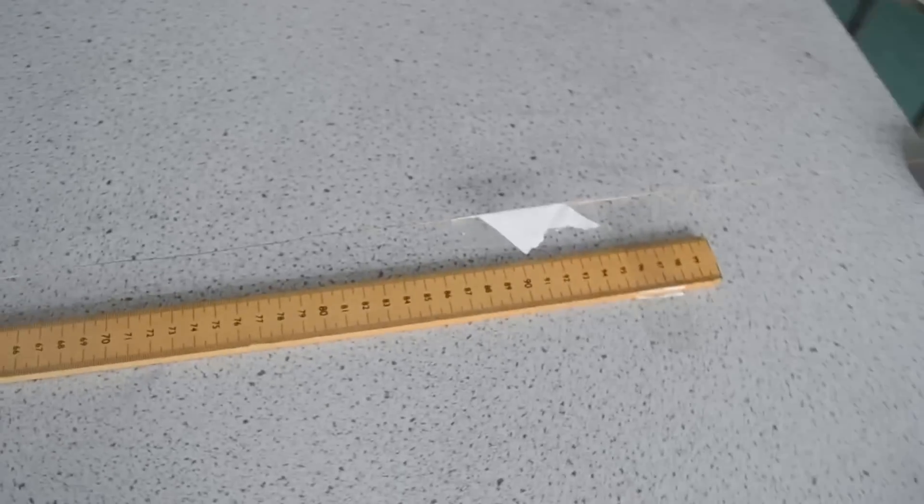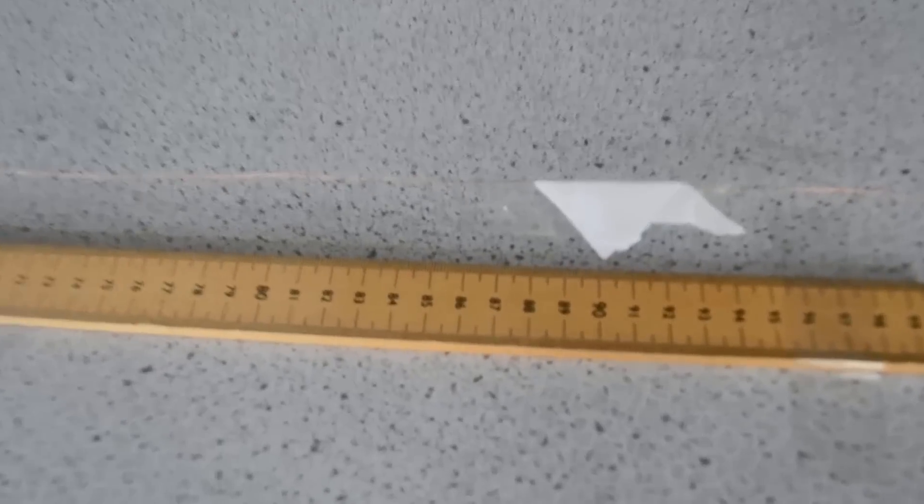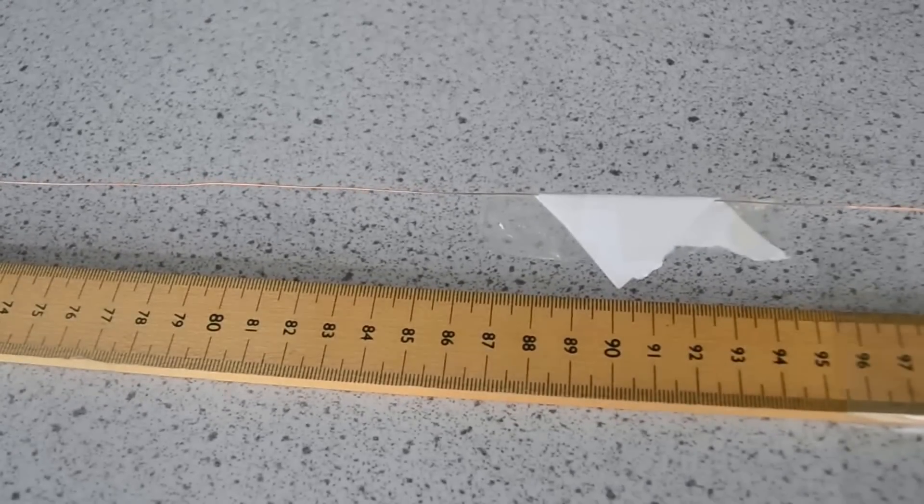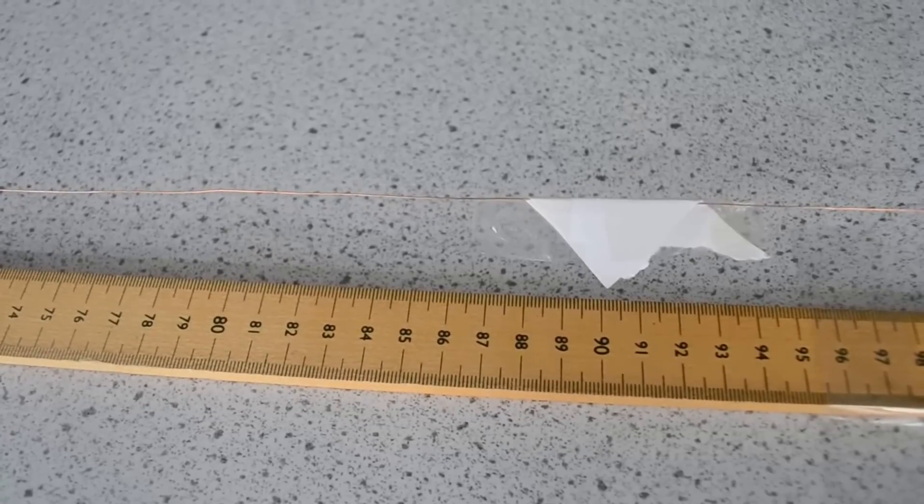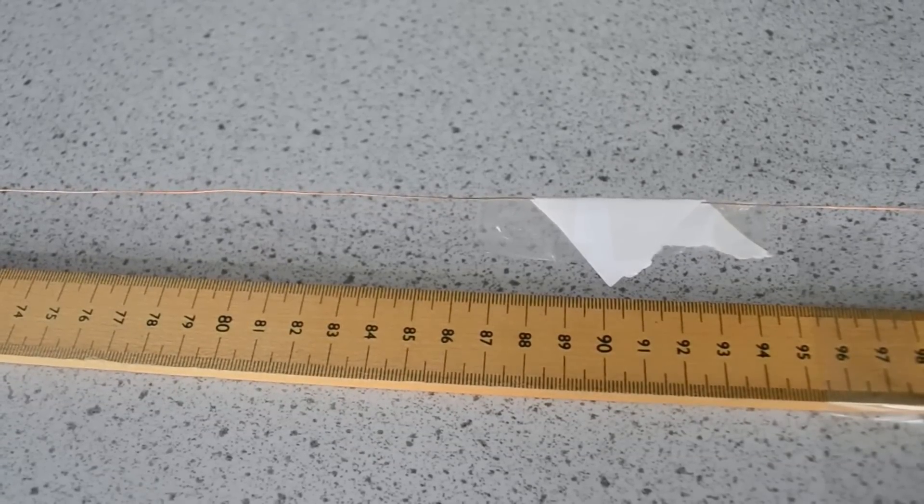Alongside the wire I've placed a meter ruler and partway along the wire I've attached a paper triangle, the purpose of which is to allow us to see when the wire is stretching and to measure how much the wire is stretched by.